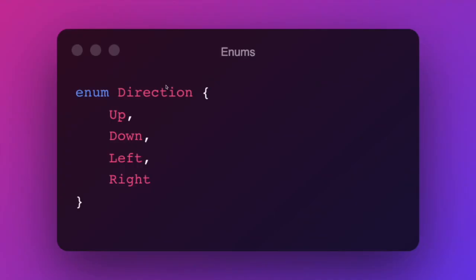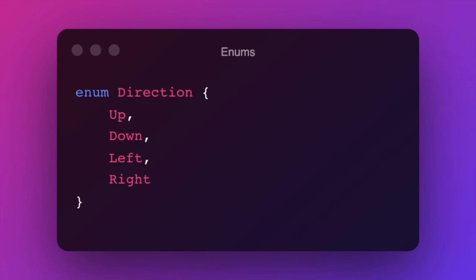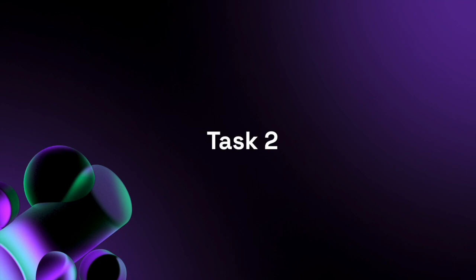Enums in Rust are defined using the `enum` keyword and allow creation of a type with one of several variants. A `Direction` enum, for example, has variants `Up`, `Down`, `Left`, and `Right`. It's worth noting that any variant valid as a struct is also valid as an enum. If you know how to handle enums from other languages, the concept carries over easily to Rust.